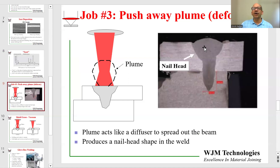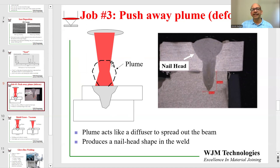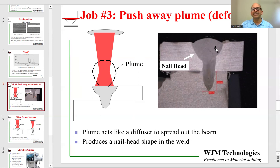Another job of the shielding gas is to push away the plume to avoid defocusing the beam. Showing a schematic: we have the lens, the laser light is focused down, and when you're making the weld there is always going to be a soot cloud right on top of it. That soot cloud, which is ionized metal and gases, acts like a defocusing lens — so you're trying to focus the beam down and the plume is actually defocusing the laser energy. This can result in a weld cross-section that looks like a nail head. If that is not acceptable, that is another reason to wash away the plume.